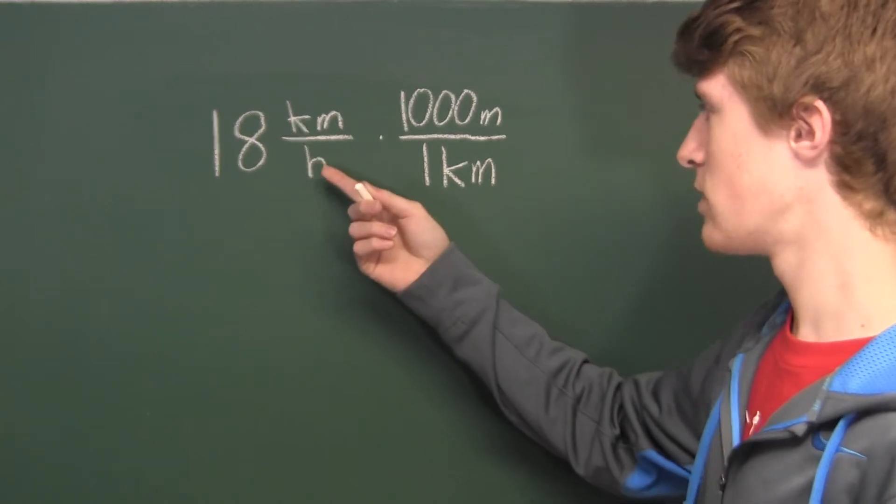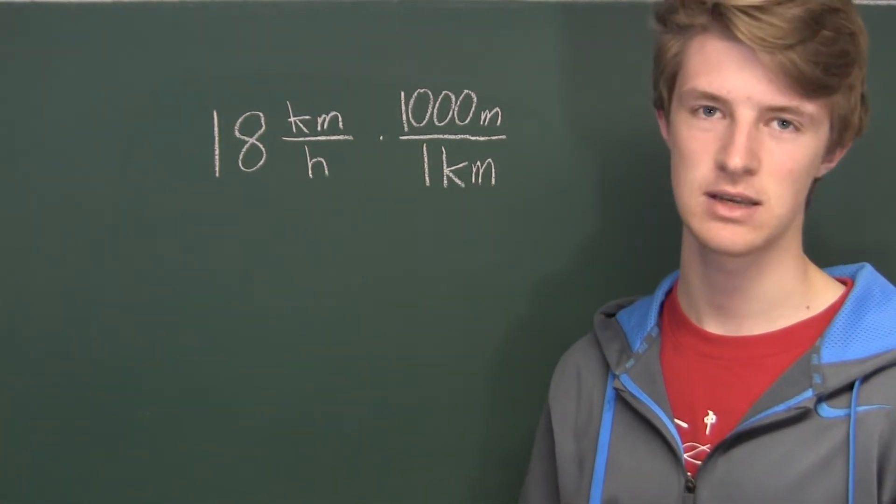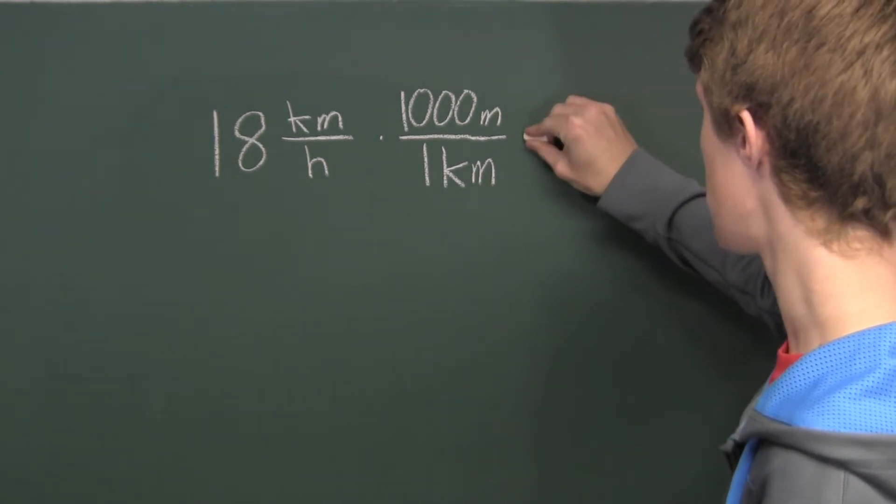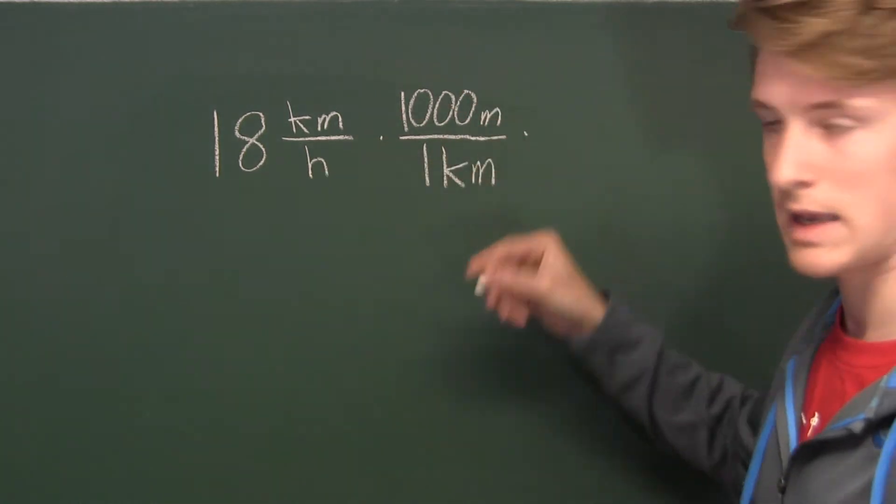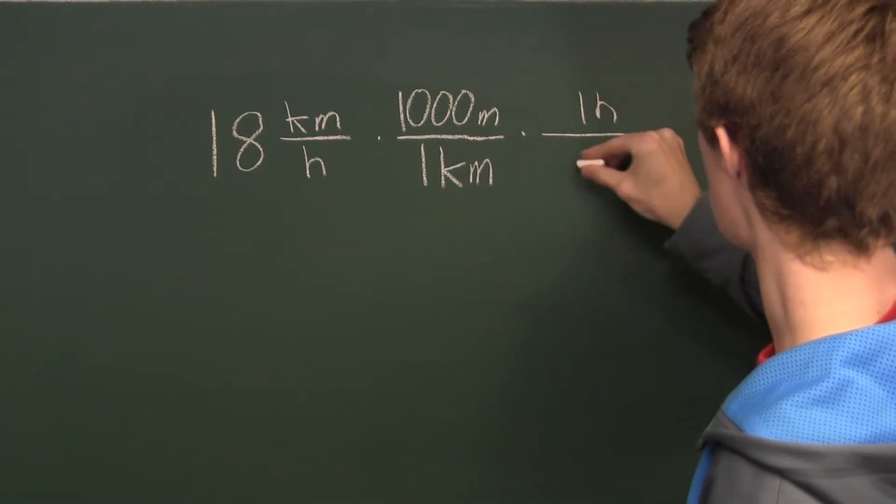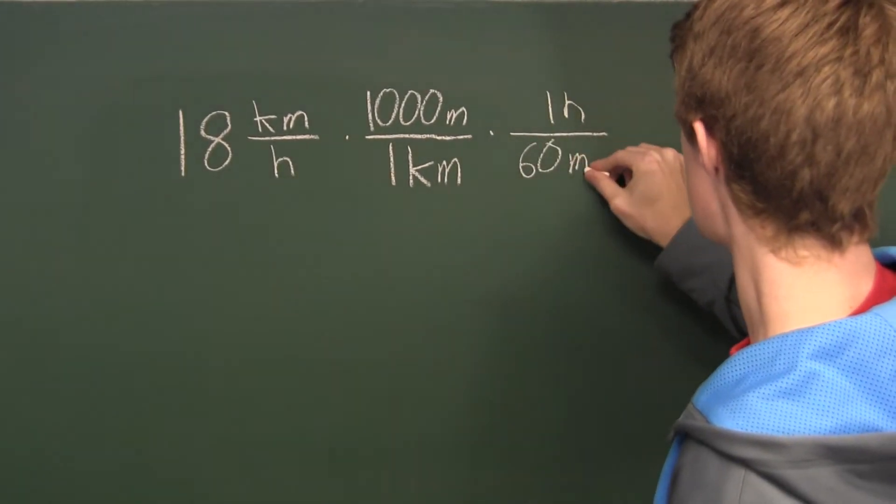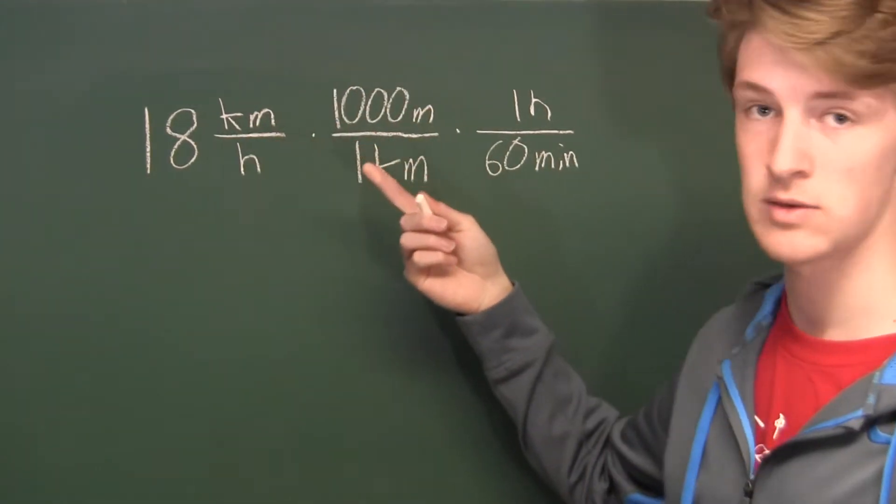Now we want to convert hours into minutes. How many minutes are in an hour? 60 minutes are in an hour. So again, we can multiply by putting the hour into the numerator so that they cancel out and having 1 hour over 60 minutes because this fraction is equal to 1 and won't change this value.